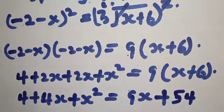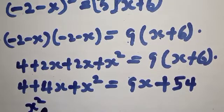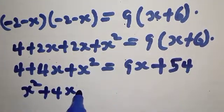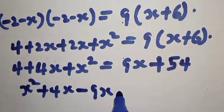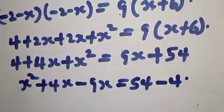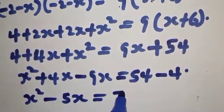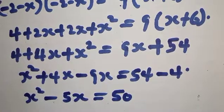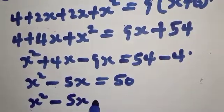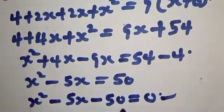9 times 6 is 54. Rearranging: X squared plus 4X minus 9X plus 4 minus 54 equals 0, which simplifies to X squared minus 5X minus 50 equals 0. This is a quadratic equation. We need to factor this to find the value of X.